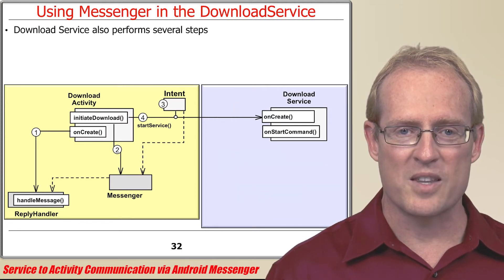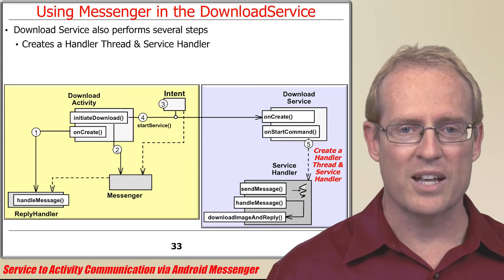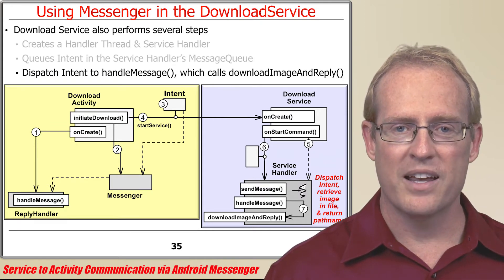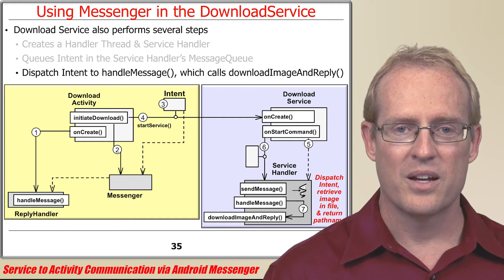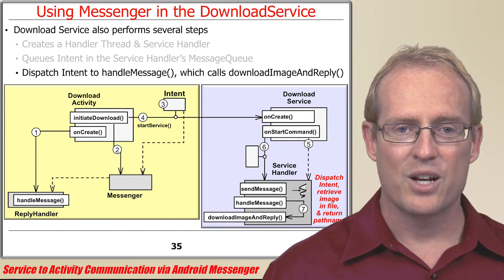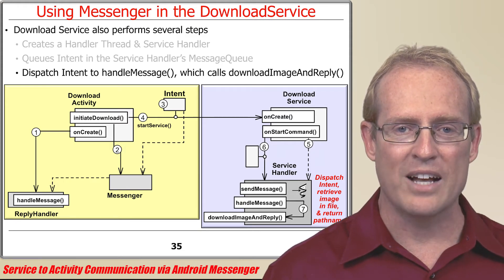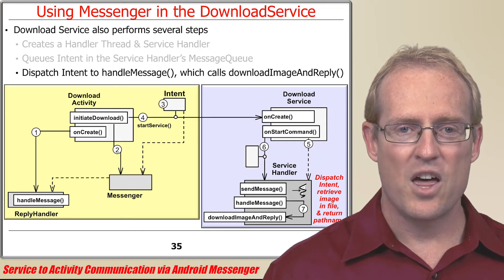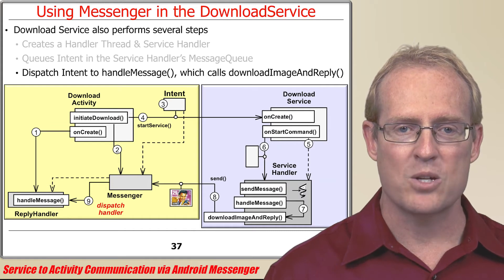At this point, control shifts to the download service, which also performs several steps. It creates a handler thread and a service handler and queues the intent in the service handler's message queue. The handler thread then uses the underlying Android looper to dequeue the intent and dispatch the service handler's handleMessageHook method, which calls downloadImageAndReply to retrieve the image, store it in a local file on the device, and return the path name of the file to the download activity by sending a message via the Messenger passing the intent. This message crosses the process boundary back to the download activity, where it's dispatched to the reply handler's handleMessageHook method, which displays the image to the user.